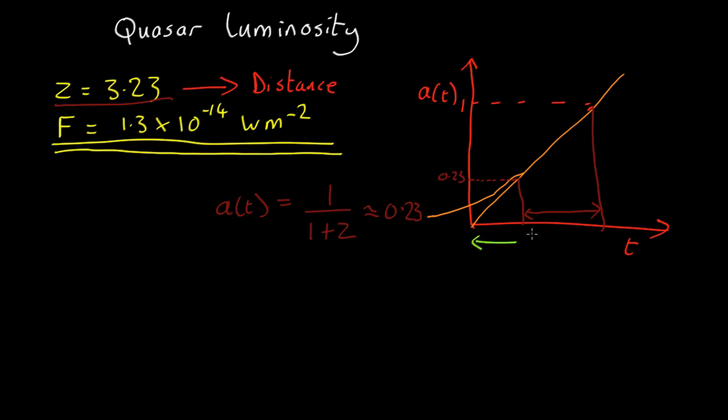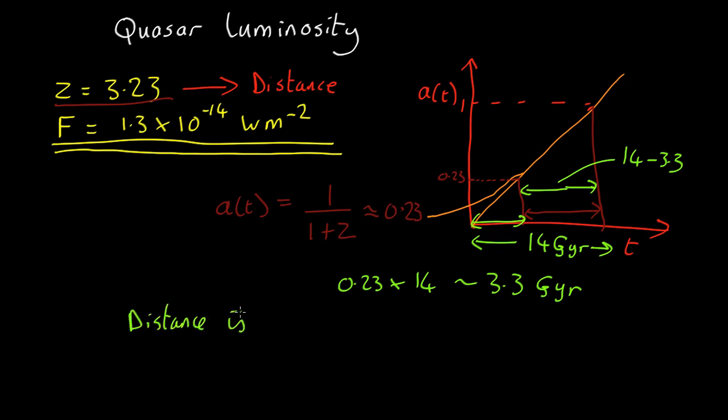Now we know from Brian's calculation the universe is about 14 billion years old, 14 giga years. This is 0.23 times 14 giga years, so 0.23 times 14 is about 3.3 giga years. So this must be the rest. So it's 14 minus 3.3. So that means the distance is roughly 14 minus 3.3, which is 10.7 billion light years.